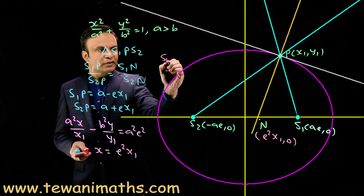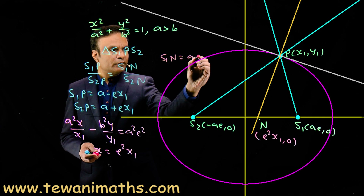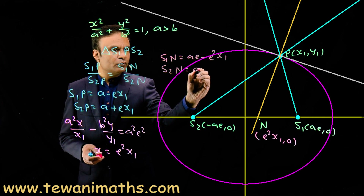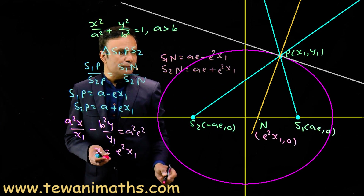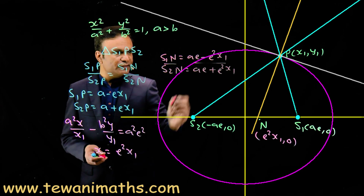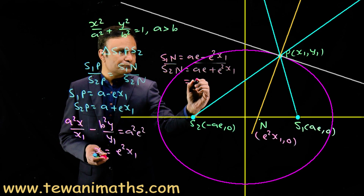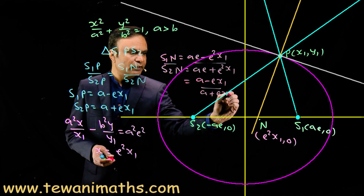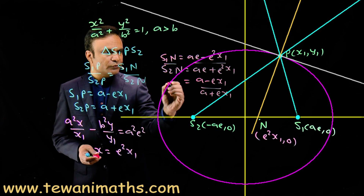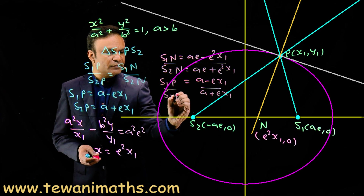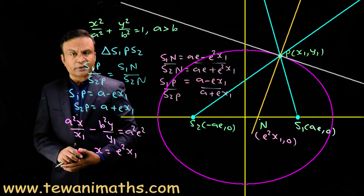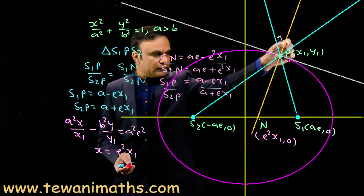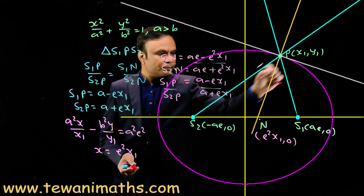So S1N = a − e²x1 and S2N = a + e²x1. Dividing these gives the ratio (a − ex1) / (a + ex1), which equals S1P / S2P. Using the property of the internal angle bisector of a triangle, we have proved that the normal bisects angle S1PS2.